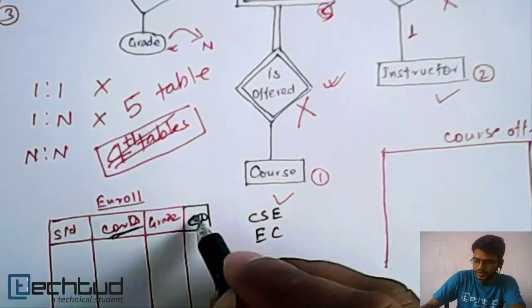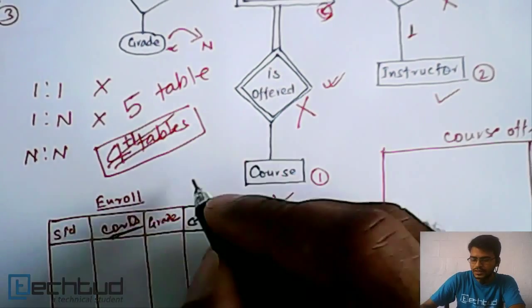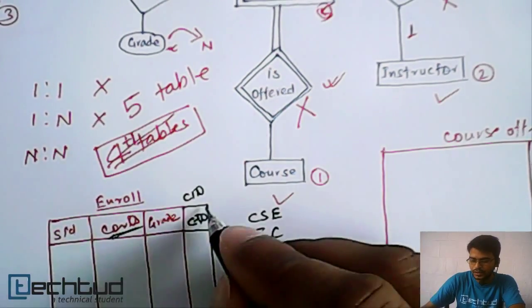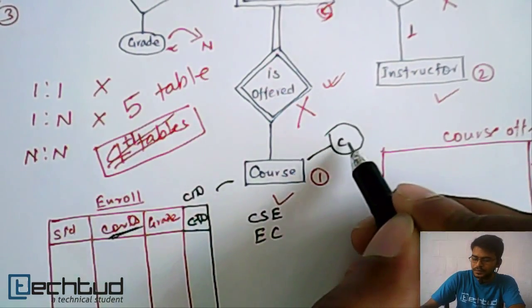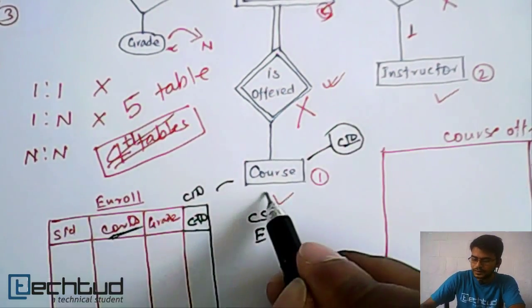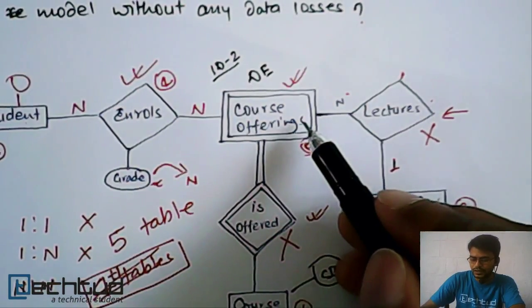CID, so this CID is basically the key attribute of this owner entity course of this weak entity course offering.